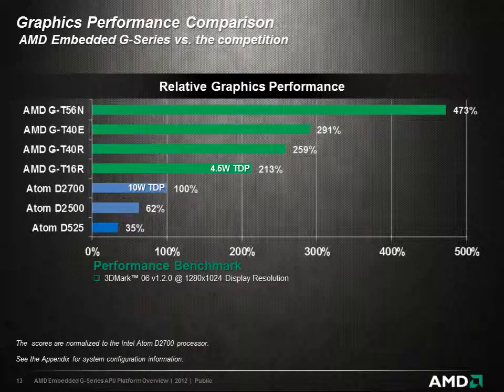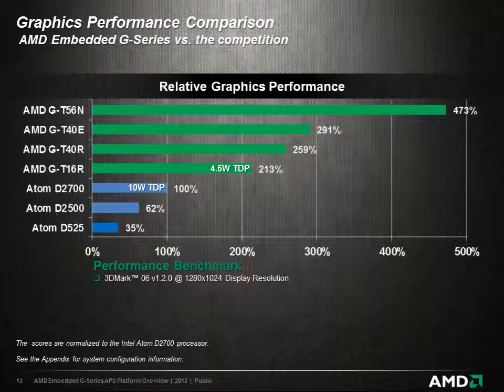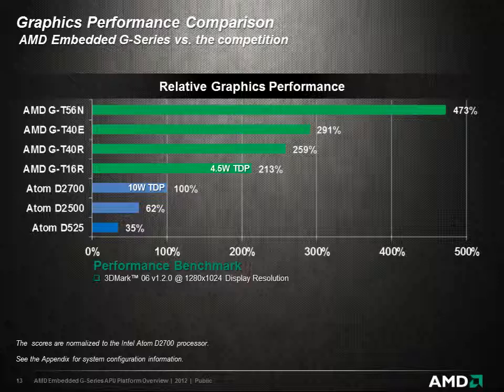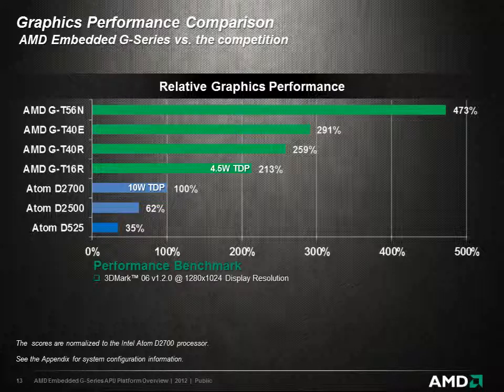Here you can see that all of the AMD Embedded G-Series APUs deliver much better graphics performance than the Intel Atom D2700. Even the 615 MHz AMD G-T16R APU offers over twice the graphics performance of the 2.13 GHz D2700, at less than half the power.